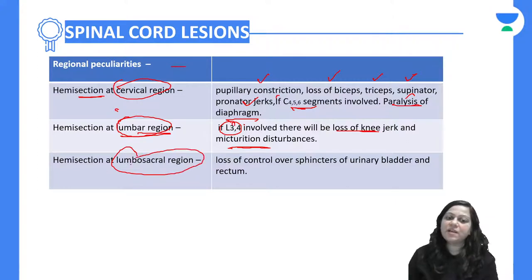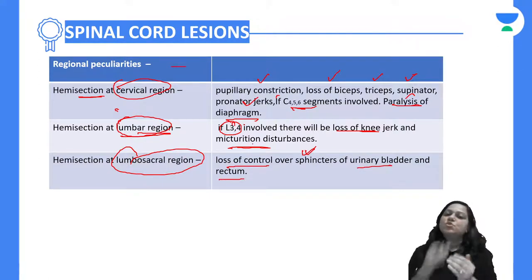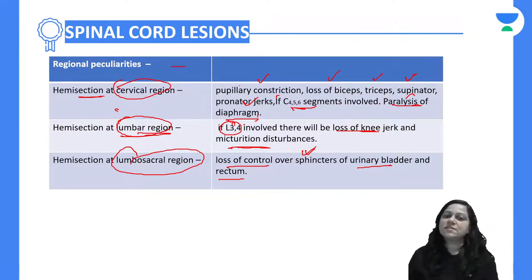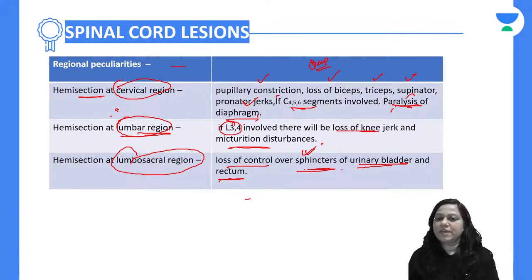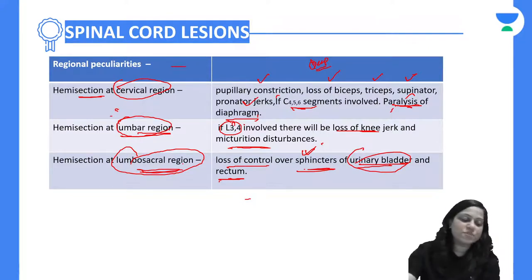For hemisection at the lumbosacral region, there will be loss of control over sphincters of the urinary bladder and rectum. From an exam perspective, if a question mentions a lesion in the spinal cord with loss of sphincter control over the urinary bladder and rectum causing incontinence, the hemisection is at the level of the lumbosacral region.